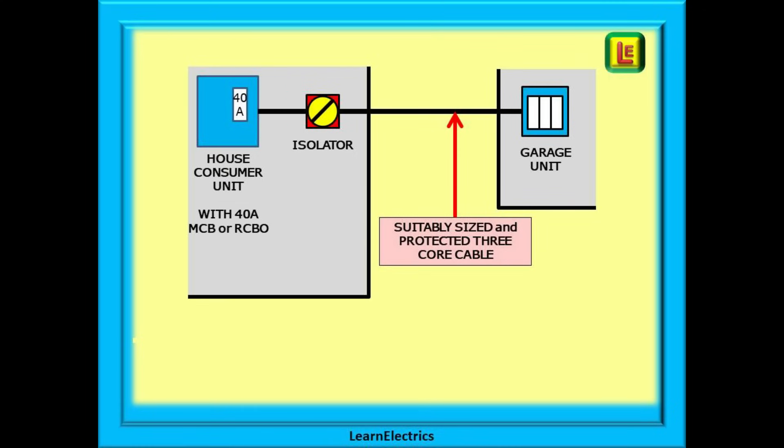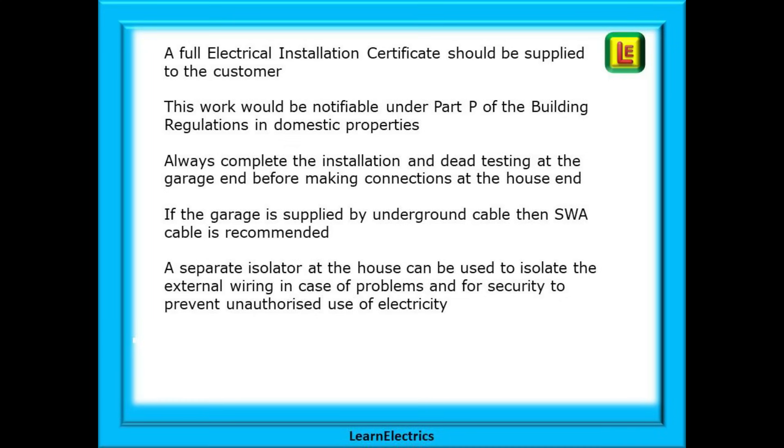Finally the cables to the garage must be suitably sized and protected and we have videos on our website and on YouTube about cable size selection. A full electrical installation certificate or EIC should be supplied to the customer. This work would be notifiable under part P of the building regulations in domestic properties. I recommend that you always complete the installation and dead test at the garage end before making connections at the house end. And if the garage is supplied by underground cable then SWA cable is recommended. A separate isolator at the house can be used to isolate the external wiring in case of problems and for security to prevent unauthorized use of electricity.